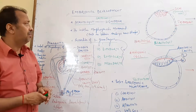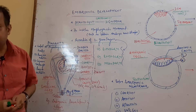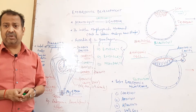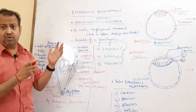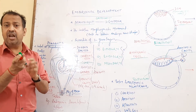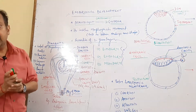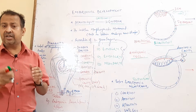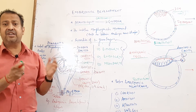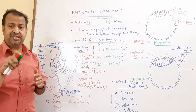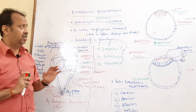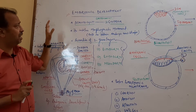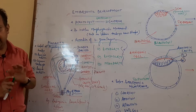Then we form the blastocyst. We discussed how the blastocyst looks. The blastocyst becomes embedded in the endometrium of the uterus — a process called implantation — and sinks deep into the uterus. We have already studied the blastocyst embedded in the uterus.